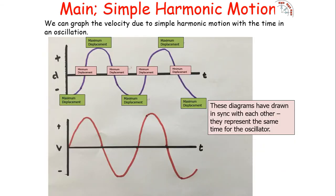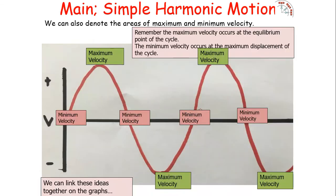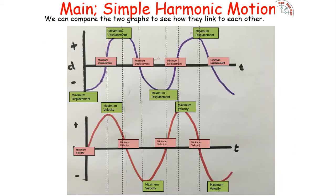We can also graph the velocity due to simple harmonic motion against time. These diagrams represent the same oscillator, drawn in sync. Velocity starts at zero (minimum), rises to a maximum, then minimum, maximum, and so on. The maximum velocity occurs at the equilibrium point when displacement is zero, while minimum velocity occurs at maximum displacement. So the graphs line up — shifted relative to one another.